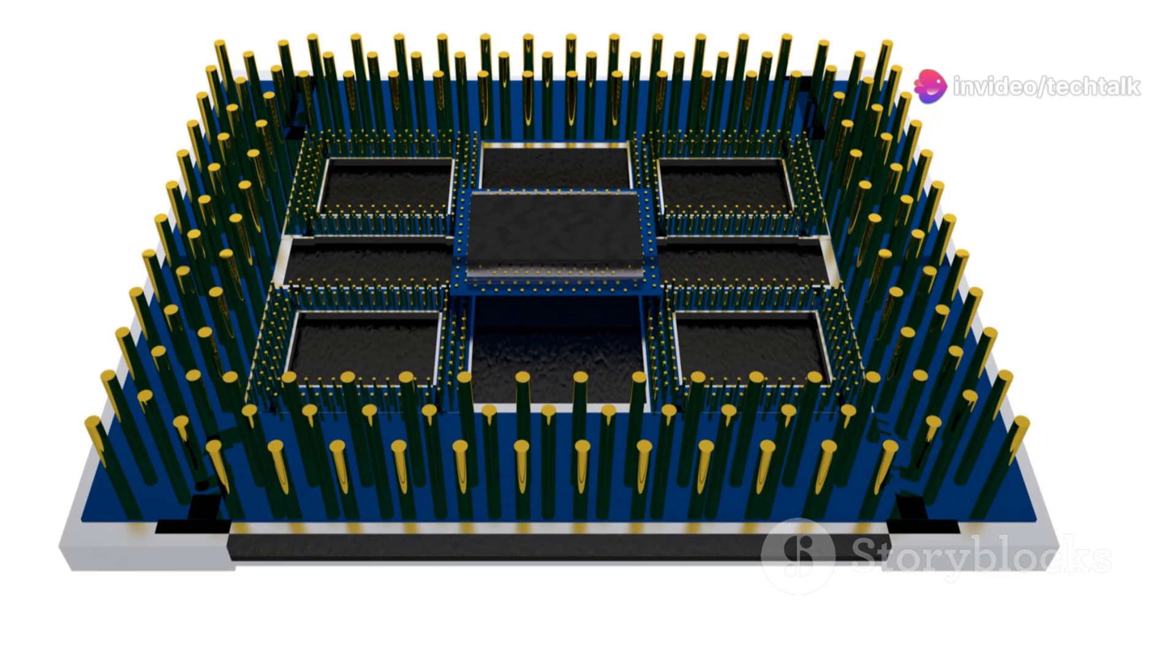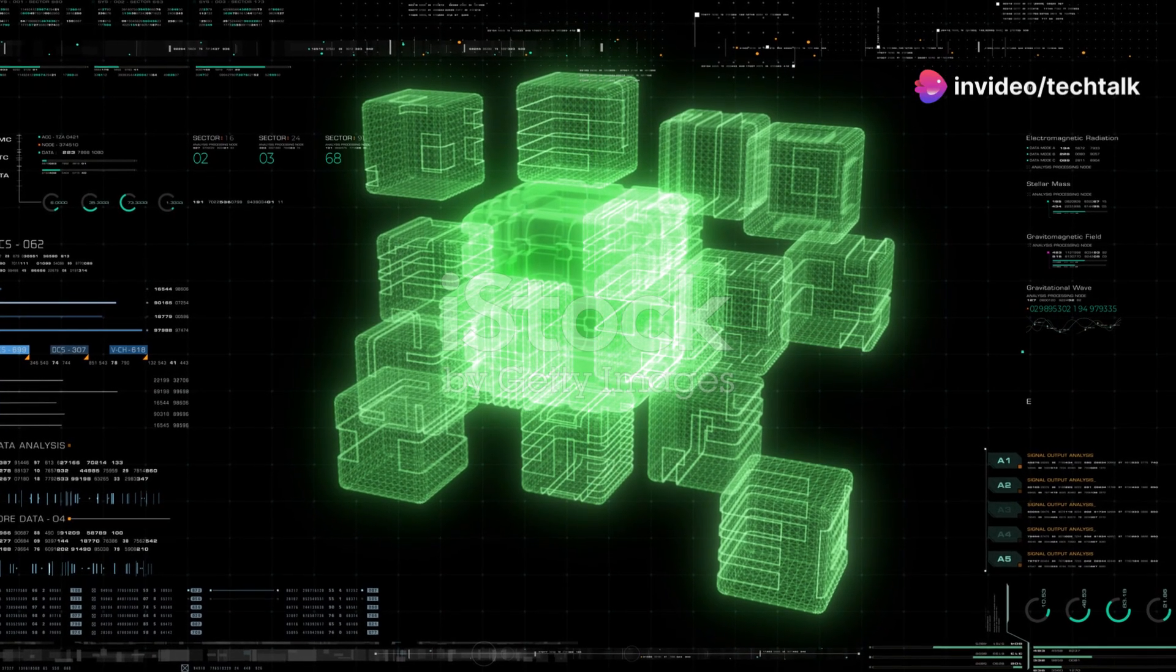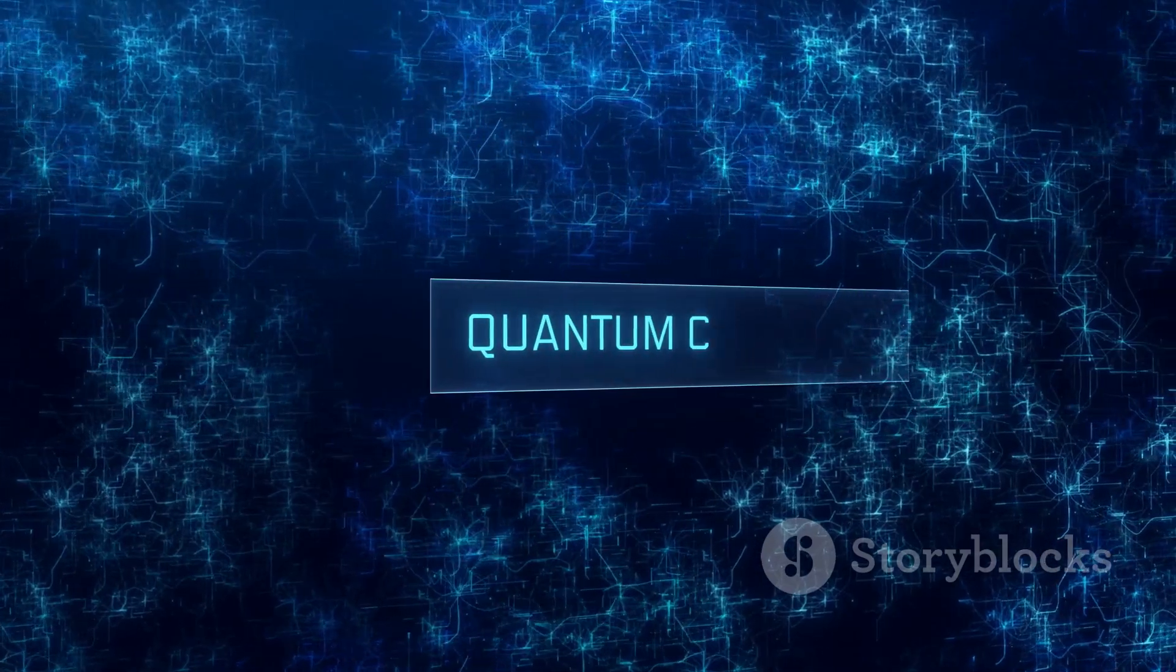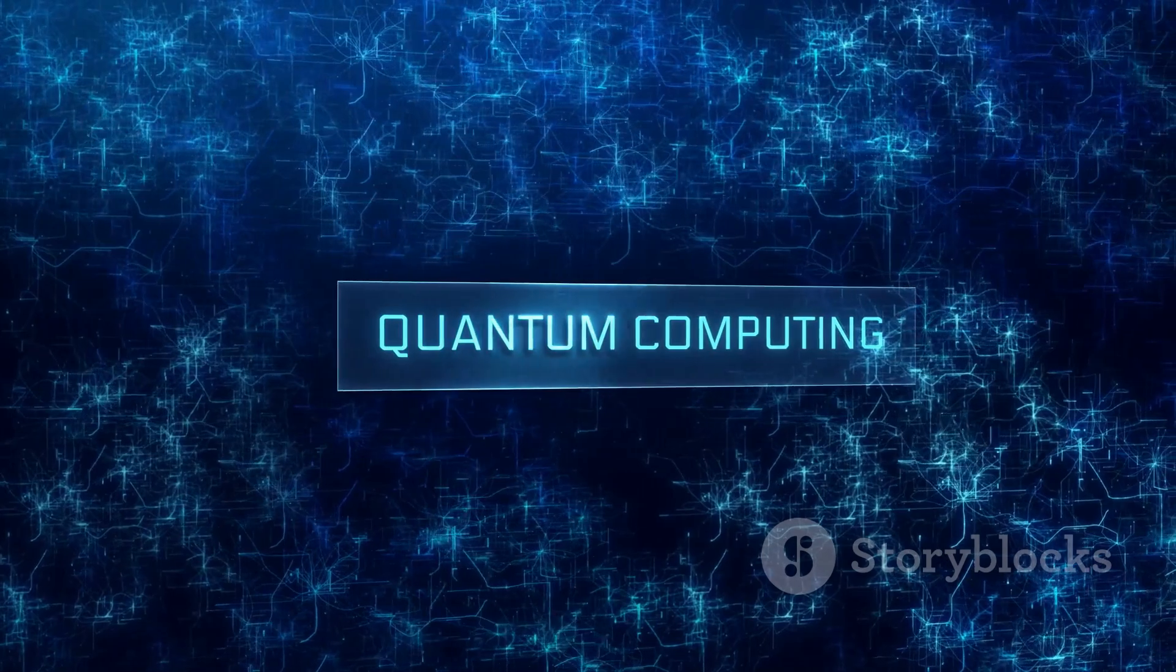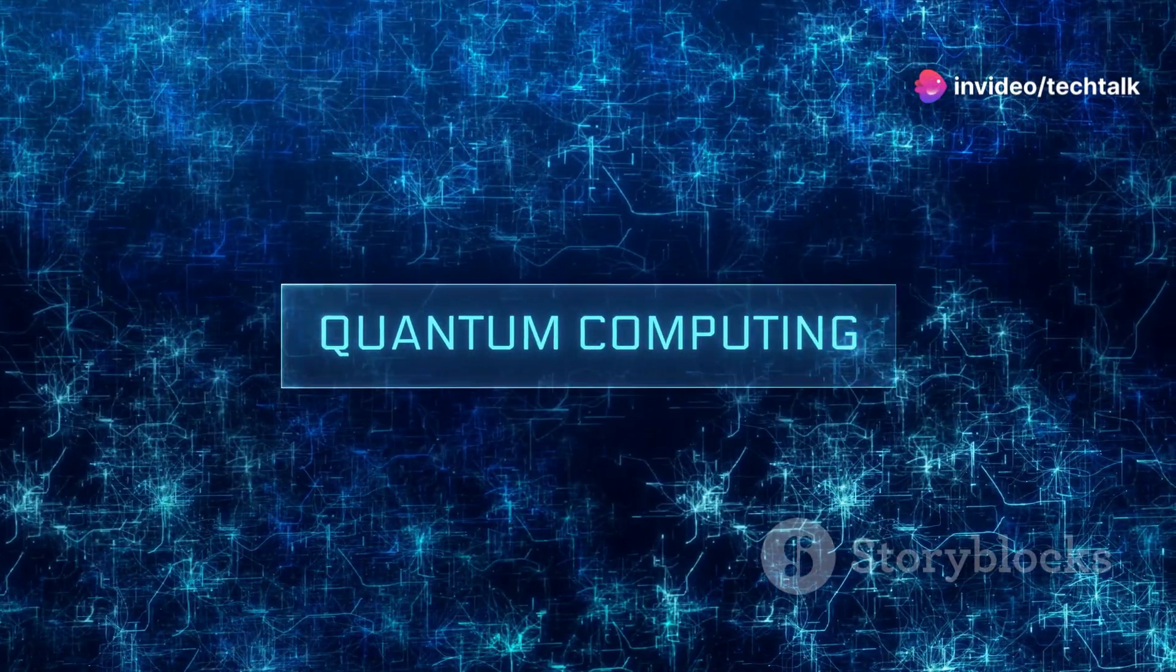Think of it like searching a maze. In a classical approach, you would try each path one at a time, methodically working through each option. A classical computer tries each path one at a time. This sequential process can be time consuming and inefficient, especially for complex mazes with many paths.